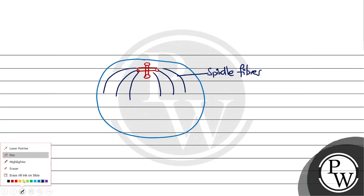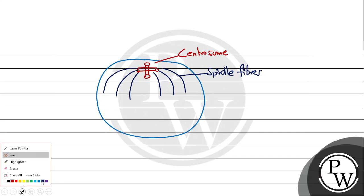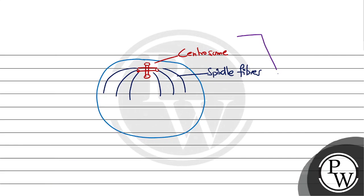Centrosome and spindle fibers constitute the mitotic apparatus. This structure formed during cell division is called the mitotic apparatus. Hope you understood it well. Best of luck.